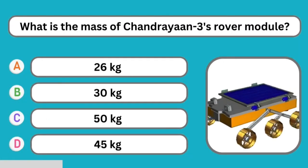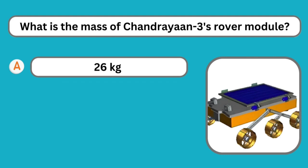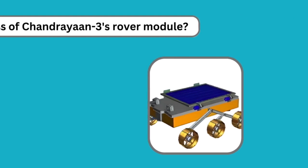Question number twenty-six: What is the mass of Chandrayaan 3's rover module? The correct answer is 26 kg. Only the rover weighs 26 kg.